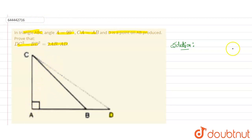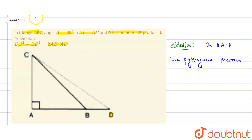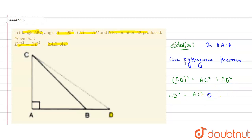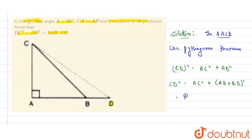First, consider triangle ACD. Since angle A is 90°, we use the Pythagorean theorem: CD² = AC² + AD². Now AD = AB + BD (clearly visible in the figure), so CD² = AC² + (AB + BD)² = AC² + AB² + BD² + 2·AB·BD.